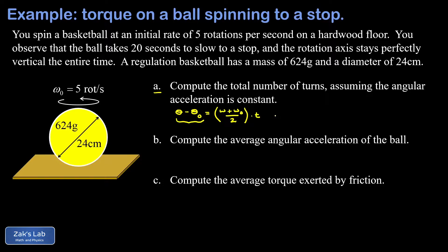But if we look at the units here, we have a final rotational velocity of zero, so we don't have to worry about that. We can write this as one-half times ω₀ in rotations per second, so 5 rotations per second, multiplied by the time for this thing to slow to a stop, which is given as 20 seconds.